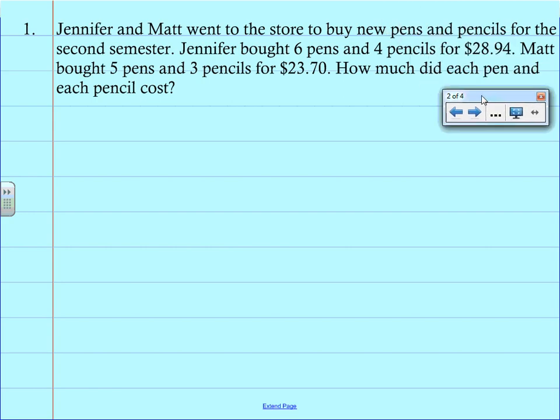And so the first step is going to be again to define the variables. So if you read through the question, it says Jennifer and Matt went to the store to buy new pens and pencils for second semester. Those are going to be the two variables. It says Jennifer bought six pens and four pencils for $28.94 and Matt bought five pens and three pencils for $23.70. The question is where you're going to look for the actual definition. It says how much did each pen and each pencil cost?